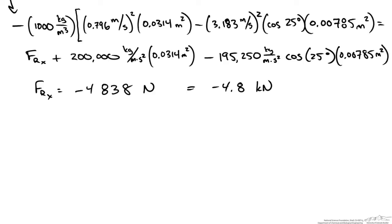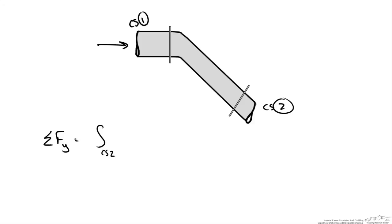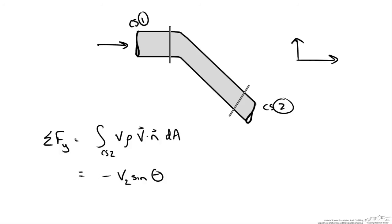We have done the x direction; now we go through it for the y direction. There is no y component at control surface 1, so we only have to worry about control surface 2. Our momentum balance equation has the sum of forces in the y direction equal to the integral at control surface 2. The y velocity leaving is downwards, so we have negative v2 sine theta, times the density. The flow acts in the same direction as the normal, so it is positive v2, times area A2.